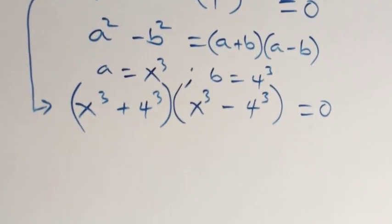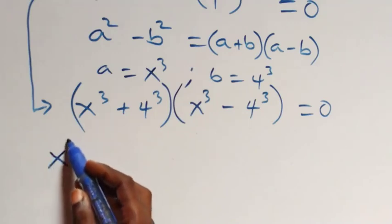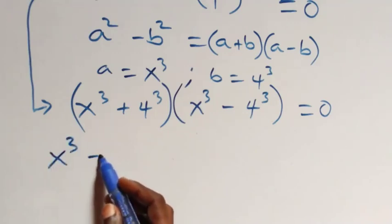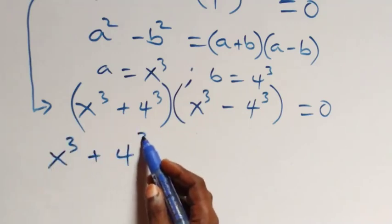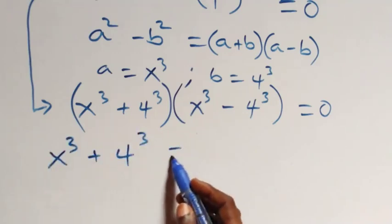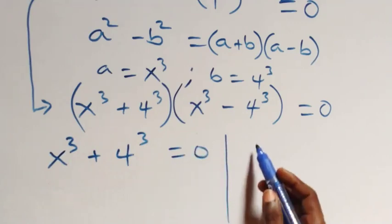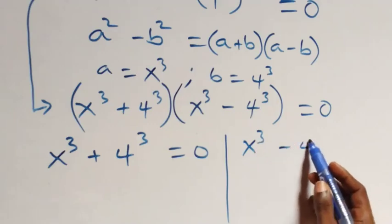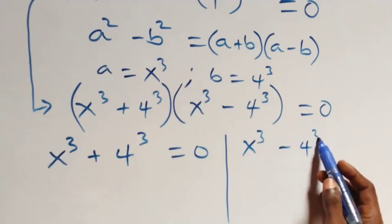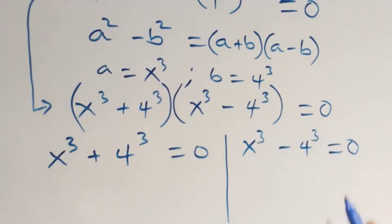The next step gives us two possible cases: we have x raised to the power 3 plus 4 raised to the power 3 equals 0, or we have x raised to the power 3 minus 4 raised to the power 3 equals 0.